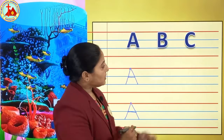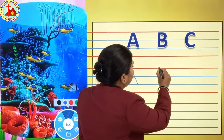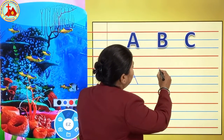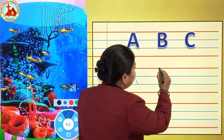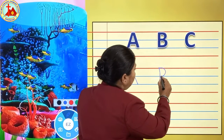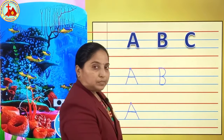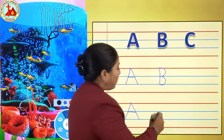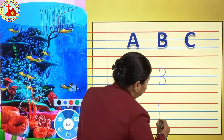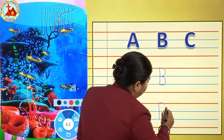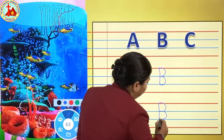After A, which letter is this? B. Now we will write letter B starting from the red line to the second blue line. Standing line, semicircle, and one more semicircle. That is letter B.